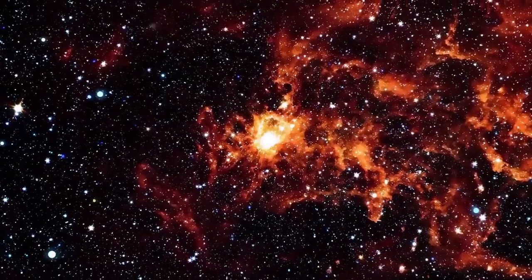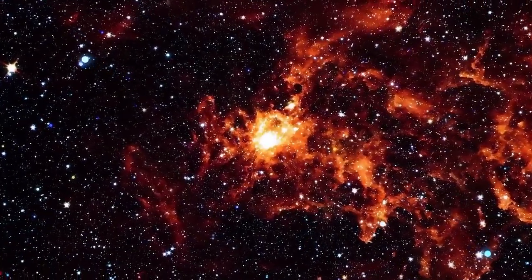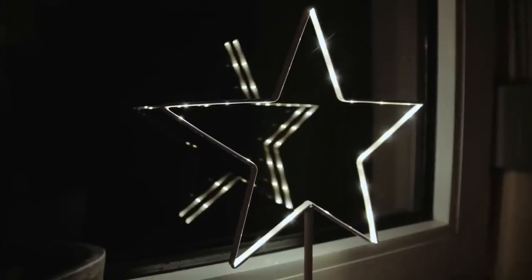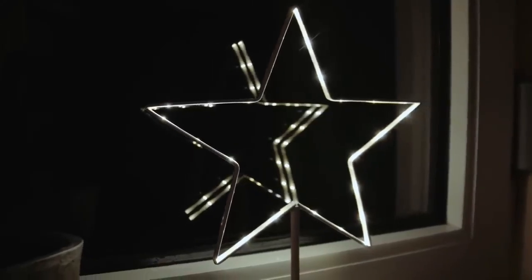To put that in perspective, the Milky Way is about 100,000 light-years across. This makes Alcyonius nearly 100 times larger, extending across a distance that would take light 16 million years to travel. If it were somehow visible to the naked eye in our night sky, it would appear as large as the full moon, despite being unimaginably far away.